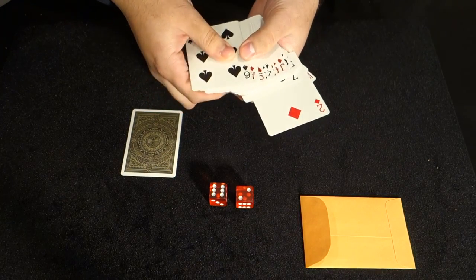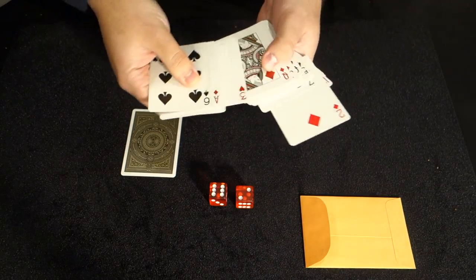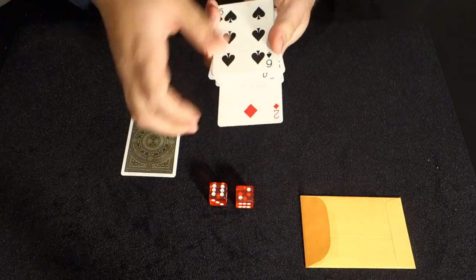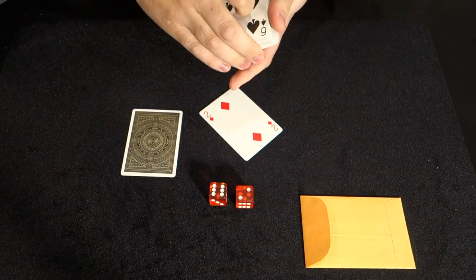So had you said top, it would have been one, two, three, four, five, six, seven. The queen of diamonds. Totally different card. But today we ended up on the two of diamonds.